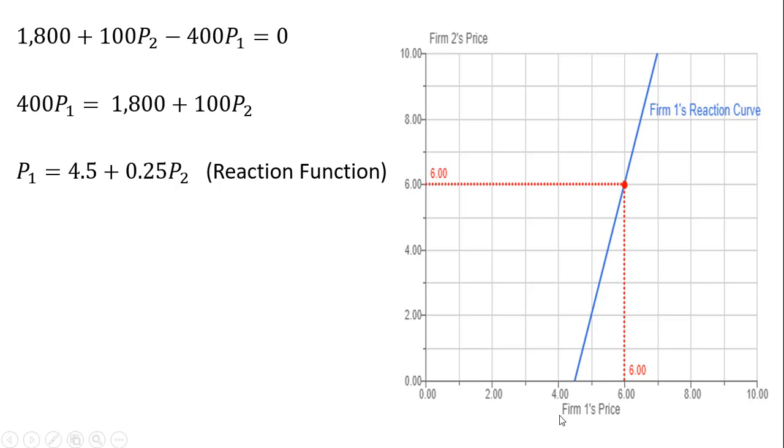We can graph that function. So over here I am graphing it as follows. Here's firm 1's price, and here on the vertical axis is firm 2's price. For example, if firm 2's price is $6 over here in the vertical axis, we plug that into firm 1's reaction function. We see firm 1's optimal response is also to charge a price of $6. You can see that from this equation. If you plug $6 in for P subscript 2, P subscript 1 would equal $6. If we plug $10 in this equation, firm 1's best response would be $7.